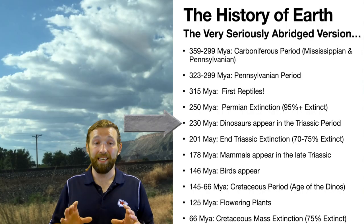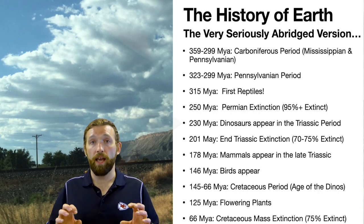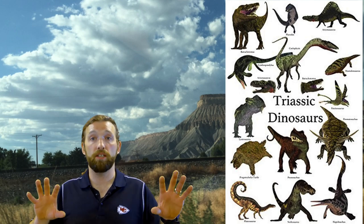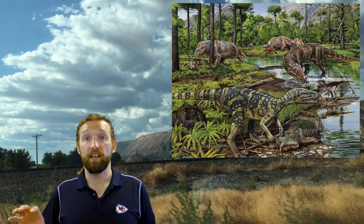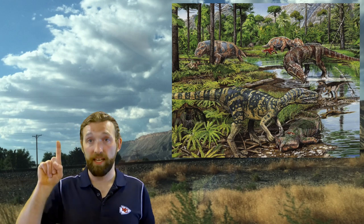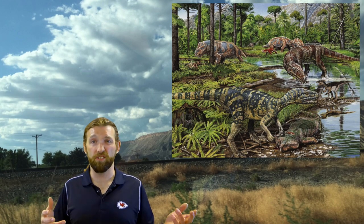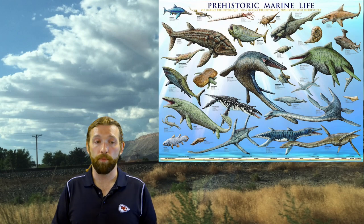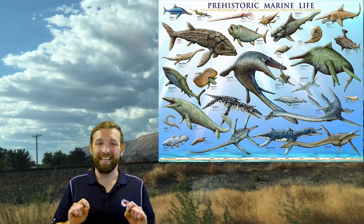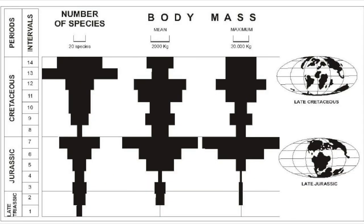We get into the Triassic and Jurassic periods and we start to see a radiation of dinosaurs into every potential ecosystem — dinosaurs in the water, on land, and in the air. Most of your favorite dinosaurs, like T. rex, Stegosaurus, and Triceratops, don't show up until the Cretaceous, but there were a lot of really cool creatures during this time. Right at the end of the Triassic period was another mass extinction.